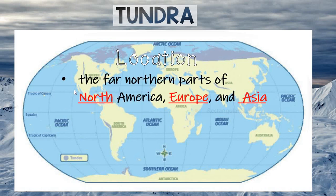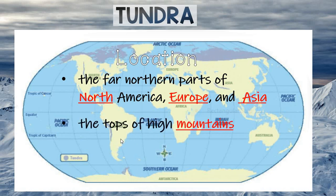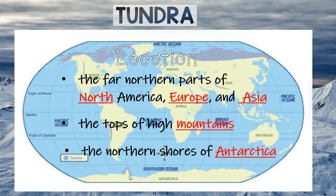The tundra is located in the far northern parts of North America, Europe, and Asia — those are our Arctic tundras, and a large part of Russia falls within that tundra. The tops of high mountains throughout the world are also considered tundras; we call those alpine tundras, meaning they're at the top of a mountain. Finally, the very northern shores of Antarctica are also tundras with that soggy soil, though the rest of Antarctica is covered with ice and is essentially lifeless.